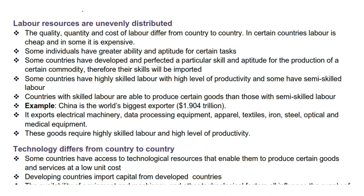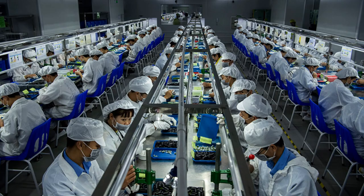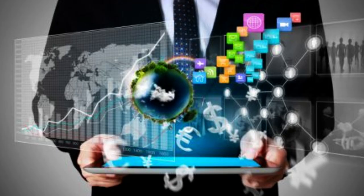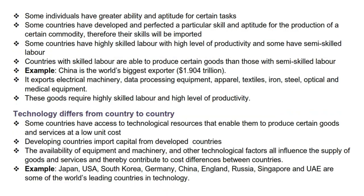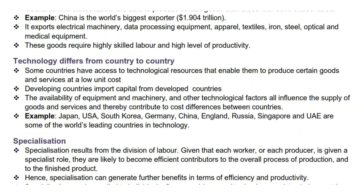For example, China is the world's biggest exporter at $1.904 trillion. It exports electrical machinery, data processing equipment, apparel, textiles, iron, steel, and optical and medical equipment. These goods require highly skilled labor and a high level of productivity.